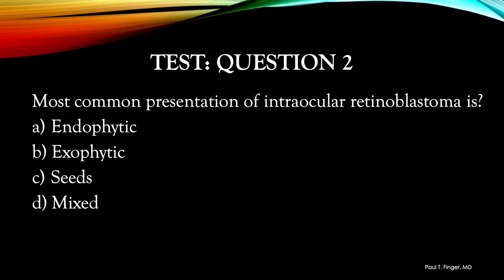The most common presenting growth pattern for primary intraocular retinoblastoma is: endophytic, or towards the vitreous; exophytic, or from the retina towards the choroid; vitreous seeds; or a mixture of the above?